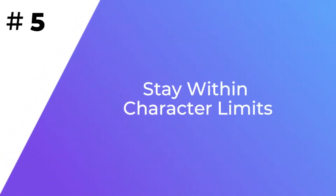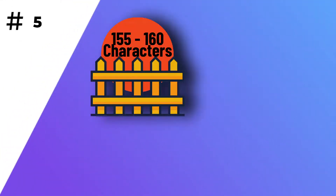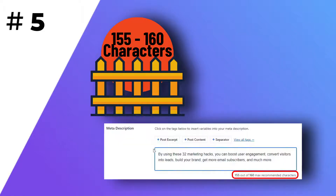Number five: stay within your character counts. The meta-description length is around 155 to 160 characters, so you should try to keep within these limits when drafting your description. However, there's no right length or fixed limit, but as a good practice, try to keep your essential information within the first 150 characters.